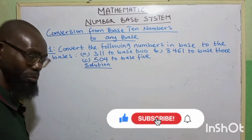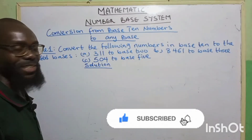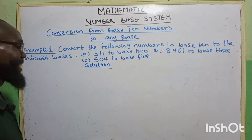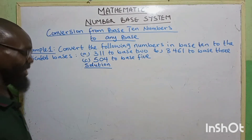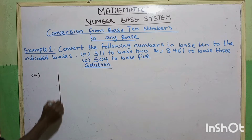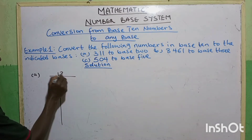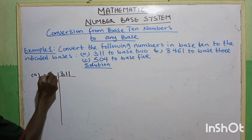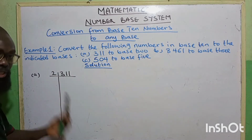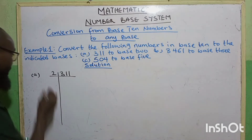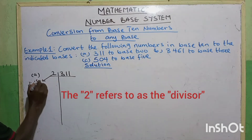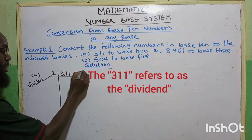Now let's look at the first example. Convert the following numbers in base 10 to the indicated bases. Number 1: we want to convert 311 to base 2. We are going to make use of a long division method, or continuous division method. The 2 here is called the divisor, while the 311 is called the dividend.